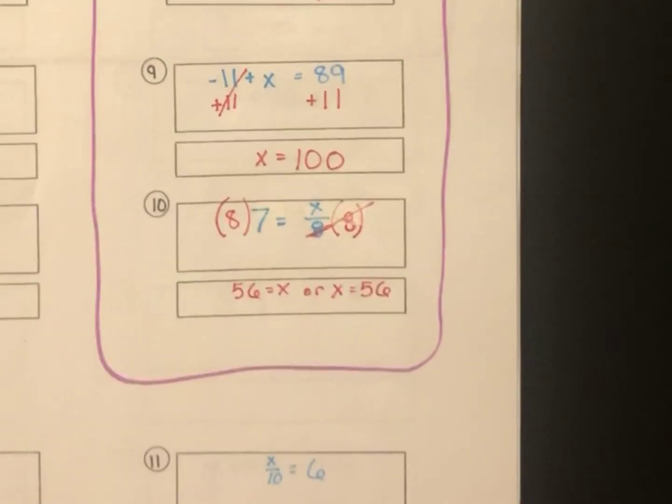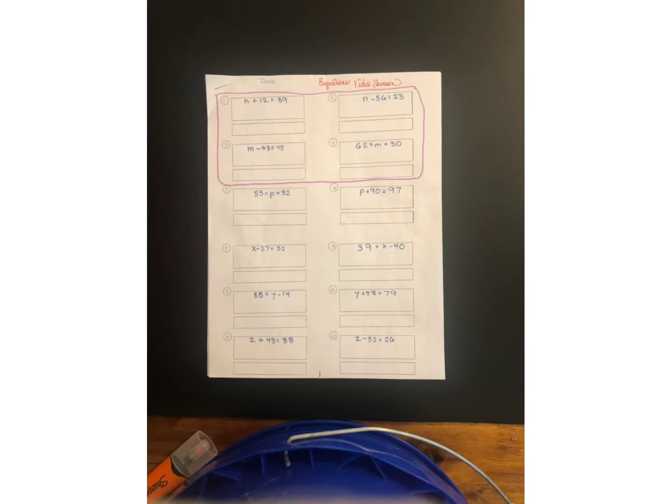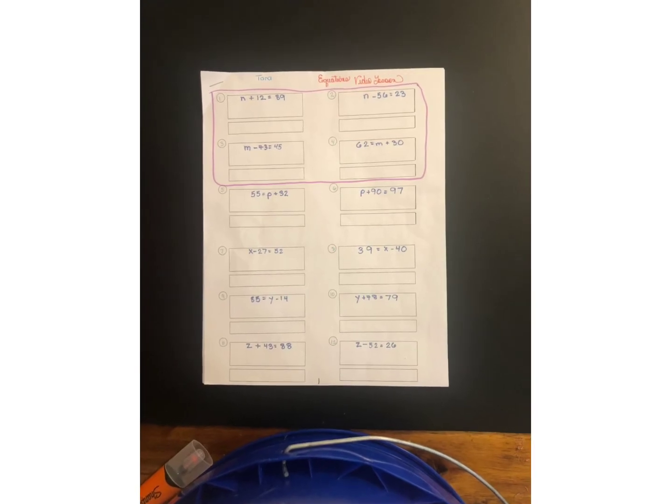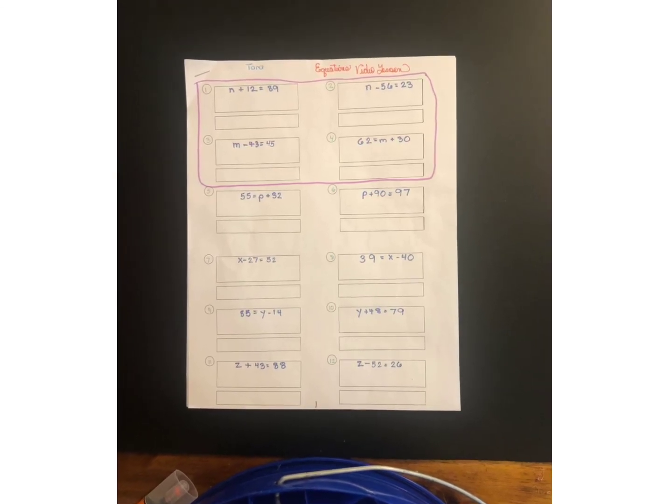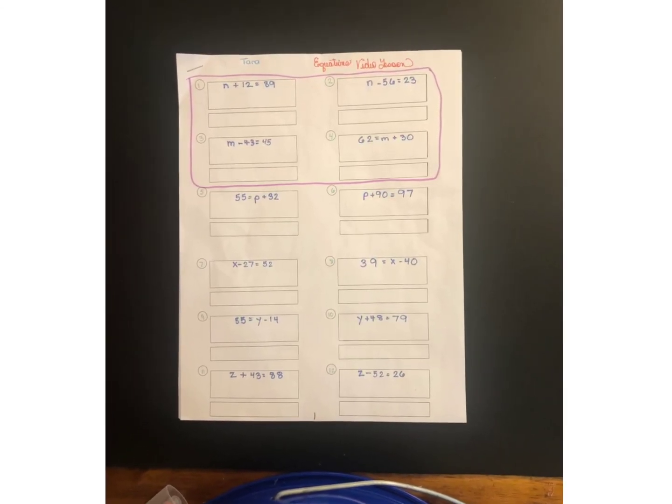Now, I want you to go back to the beginning of this packet and start with page 1 and fill in everything that we didn't do in this lesson. If you're not sure about anything, look at the examples on that page. Or, if you're on page 4, you can look at examples from a different page. But you have plenty of examples for every kind of problem, so you can do it by yourself.